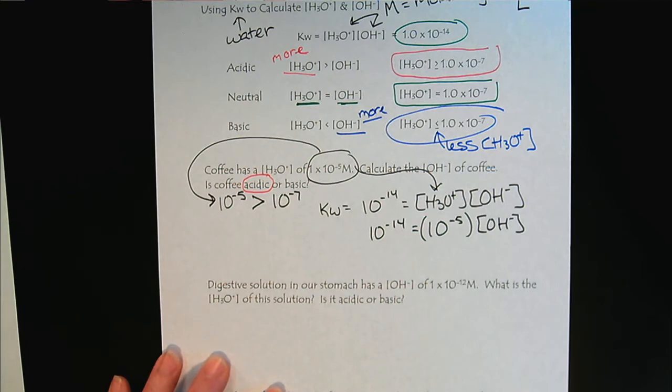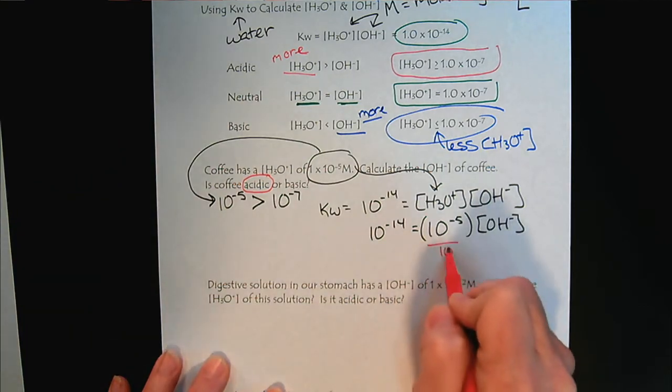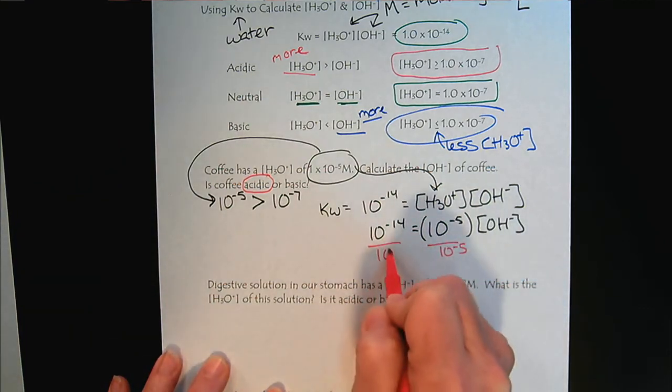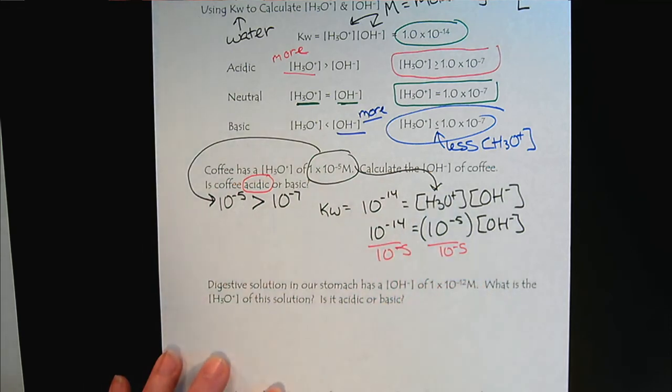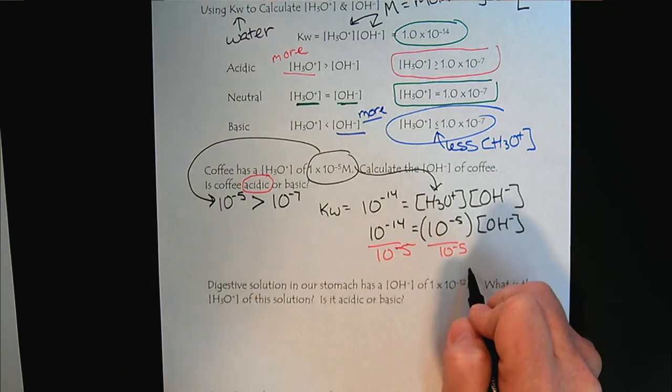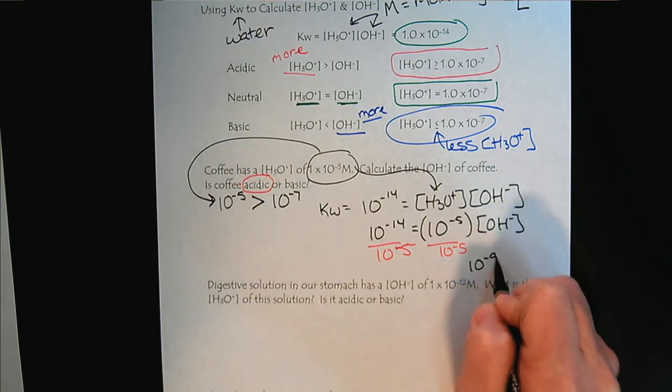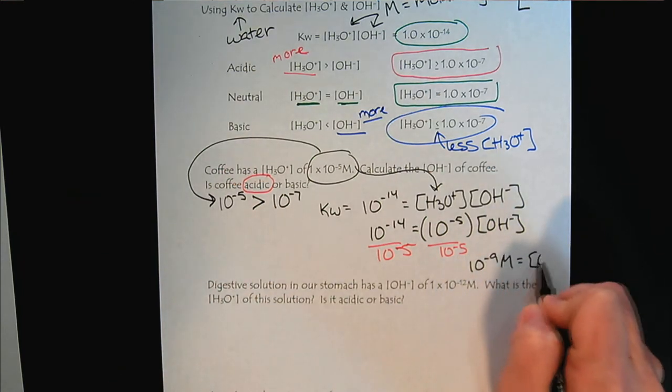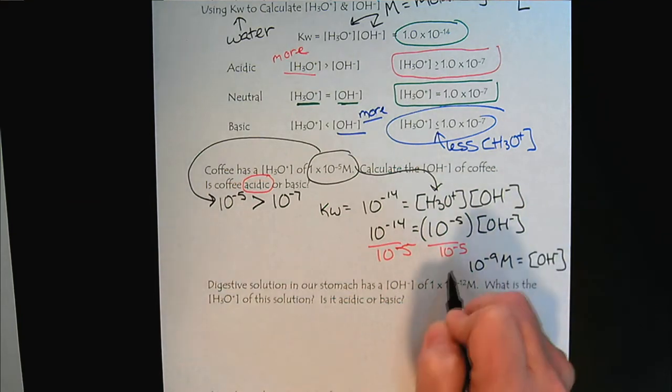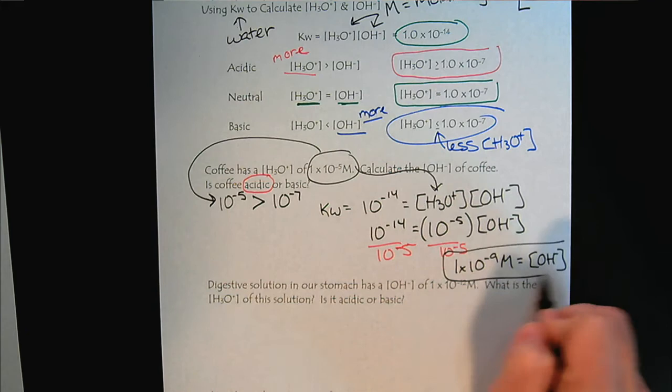10 to the minus 14 equals 10 to the minus 5 times the hydroxide. So we just do some simple algebra, divide both sides by 10 to the minus 5. And our hydroxide concentration will be 10 to the minus 9 molar. And we'll put the 1 back in, but it's understood.